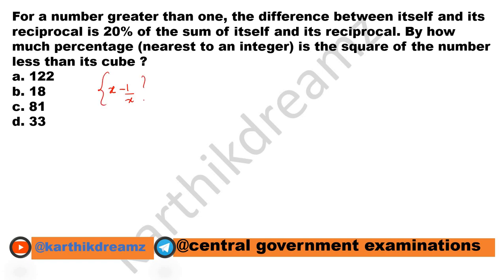So x minus 1 by x is the difference which equals 20% of x plus 1 by x. When we solve this, x minus 1 by x equals 20 by 100 times x plus 1 by x. So 100 comes over here. 100 into x minus 1 by x equals 20 into x plus 1 by x.